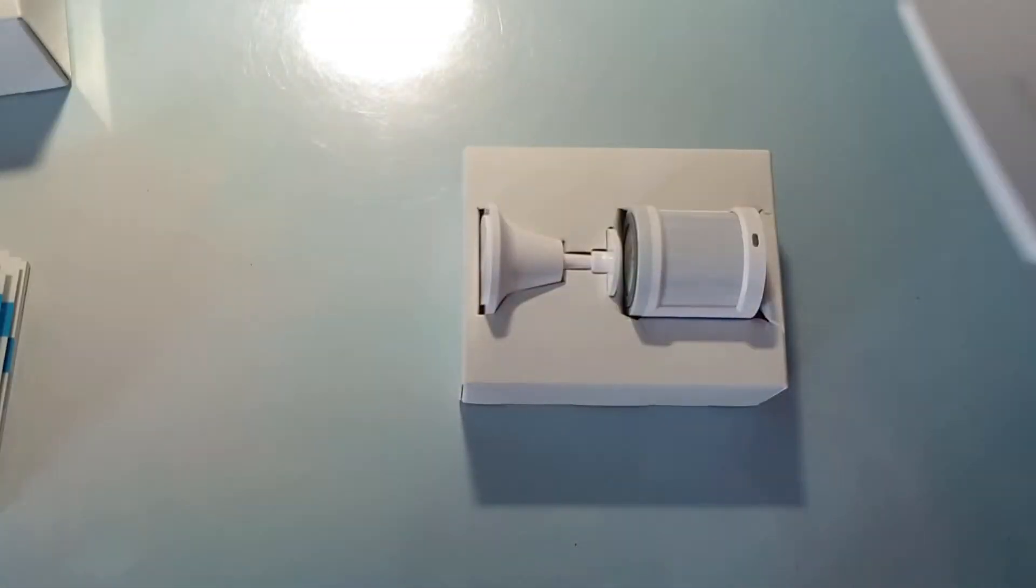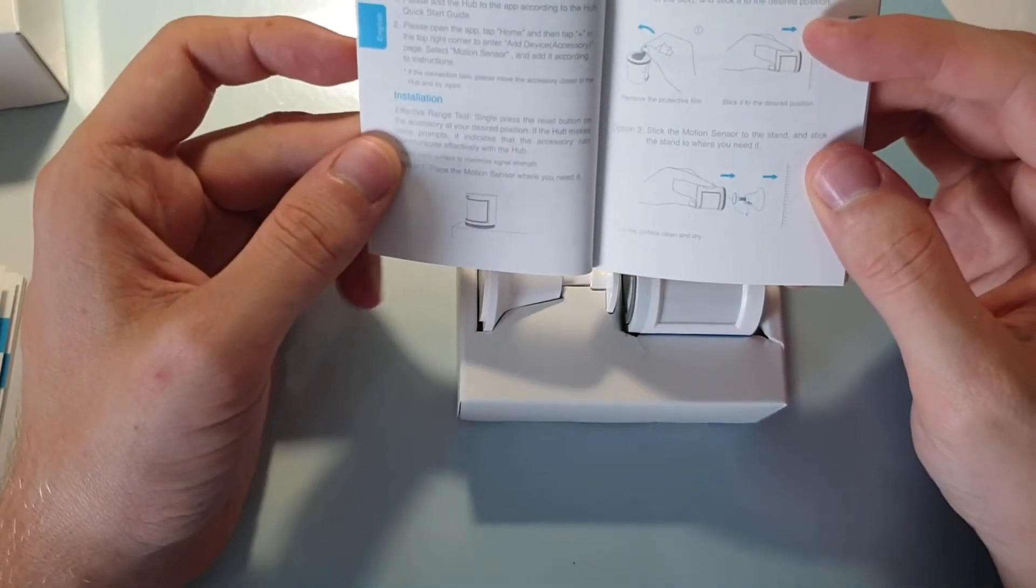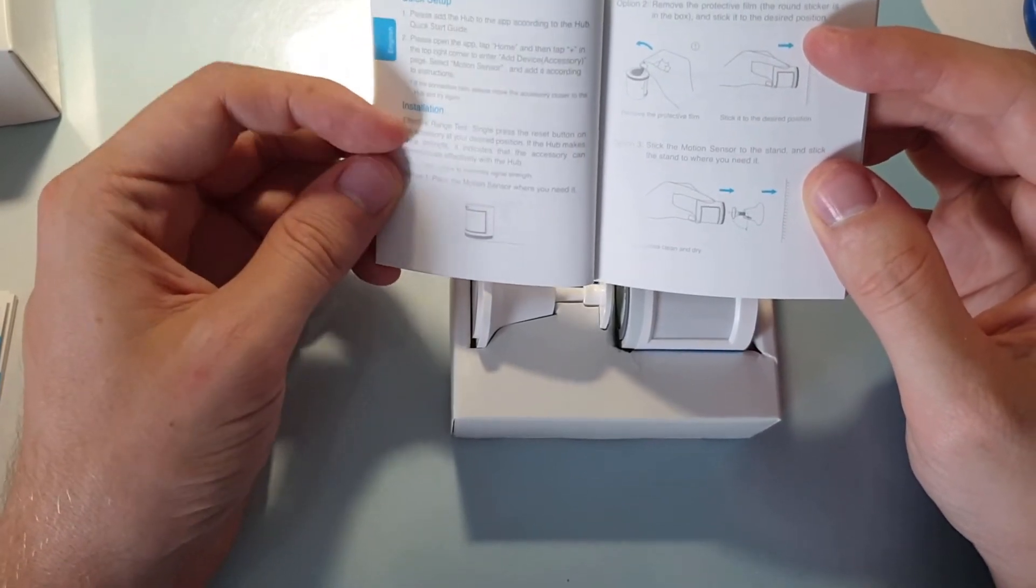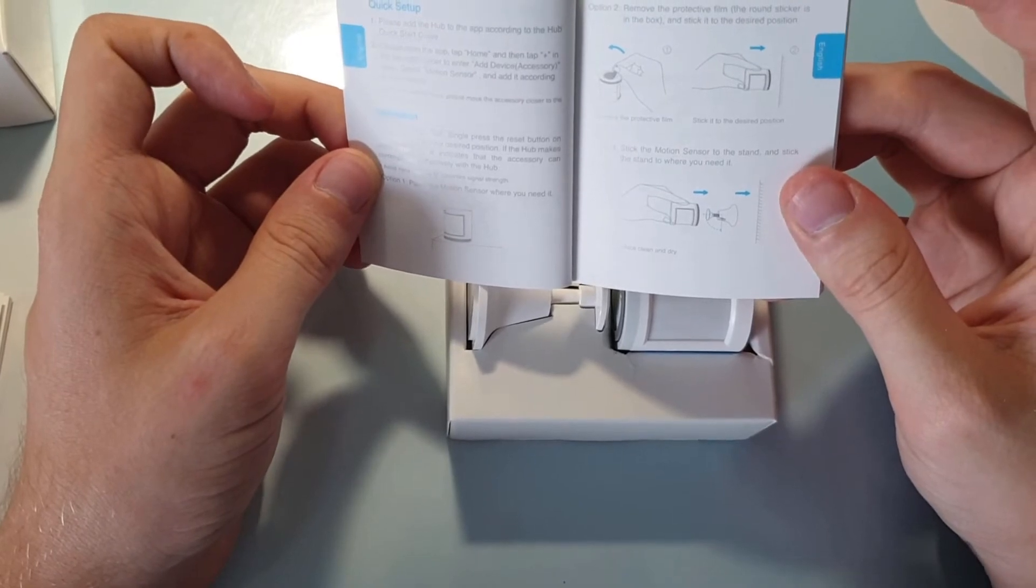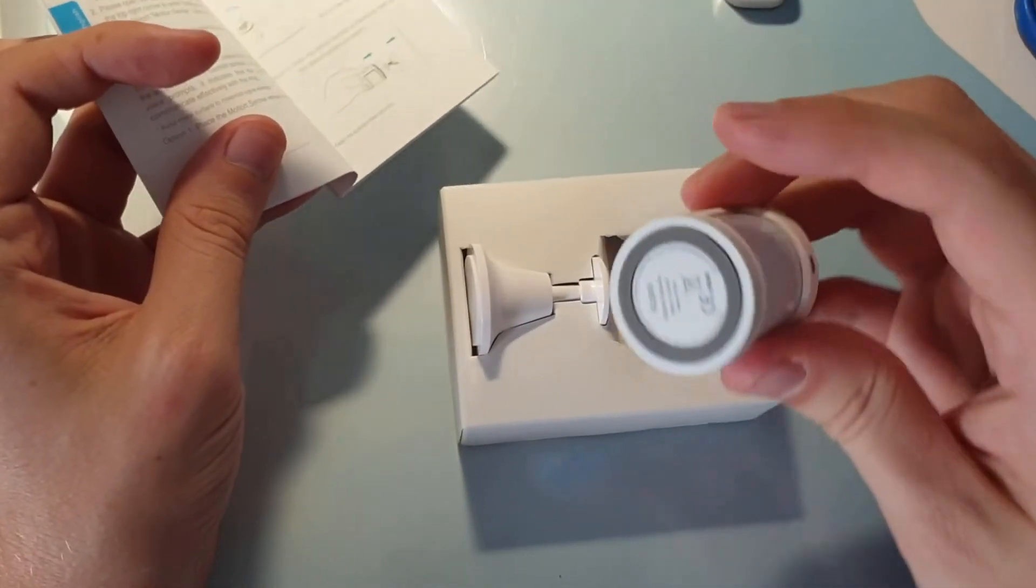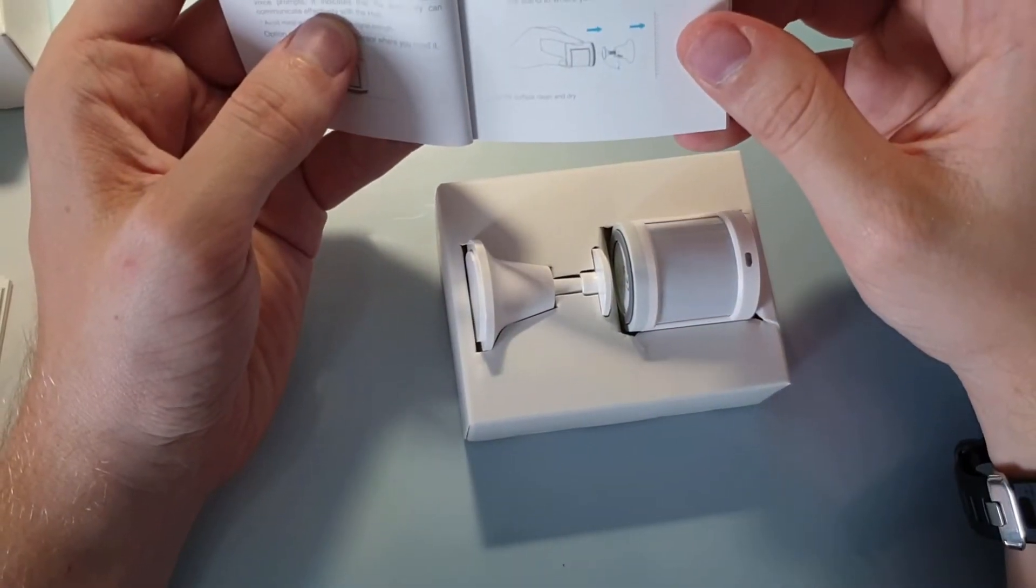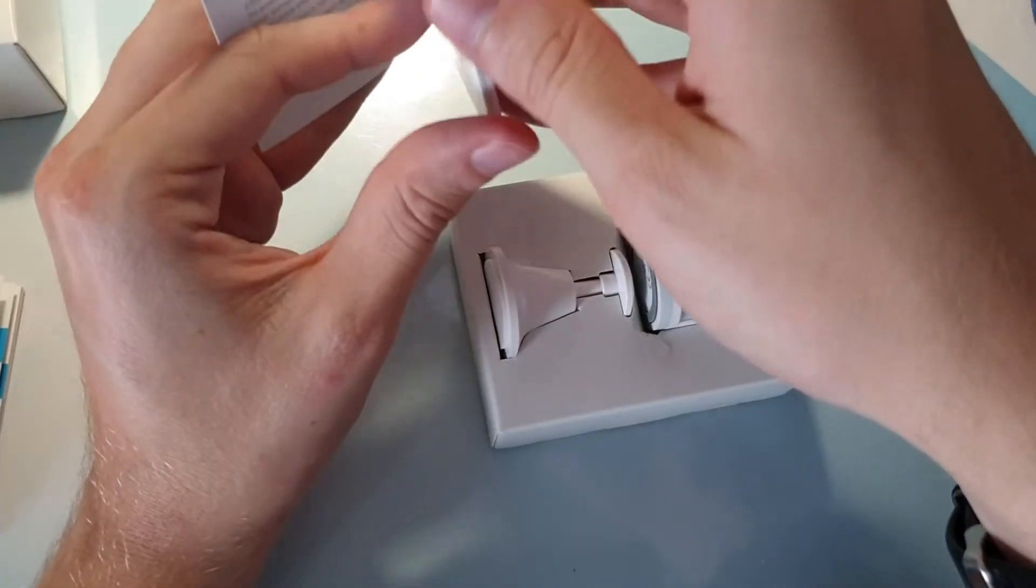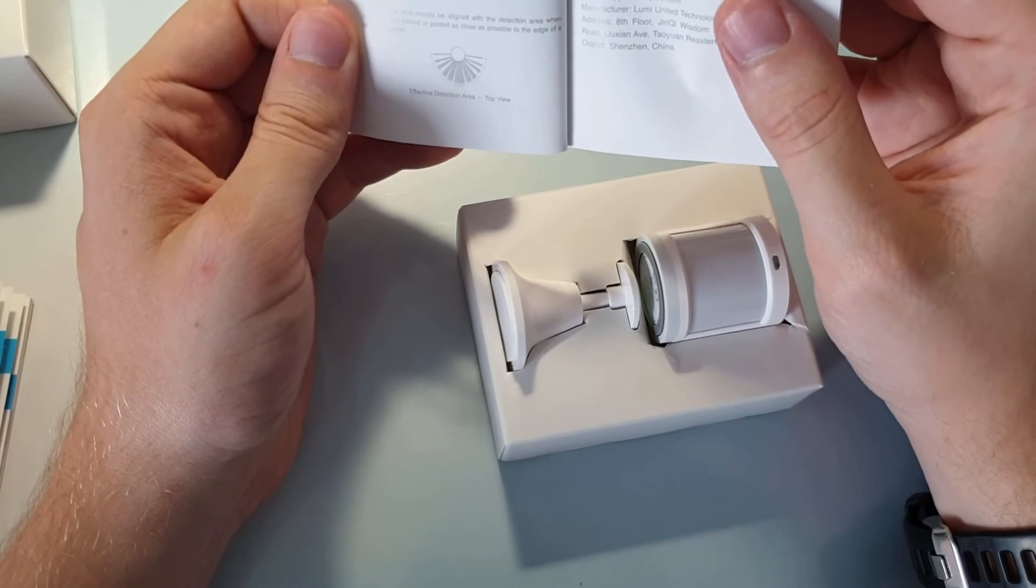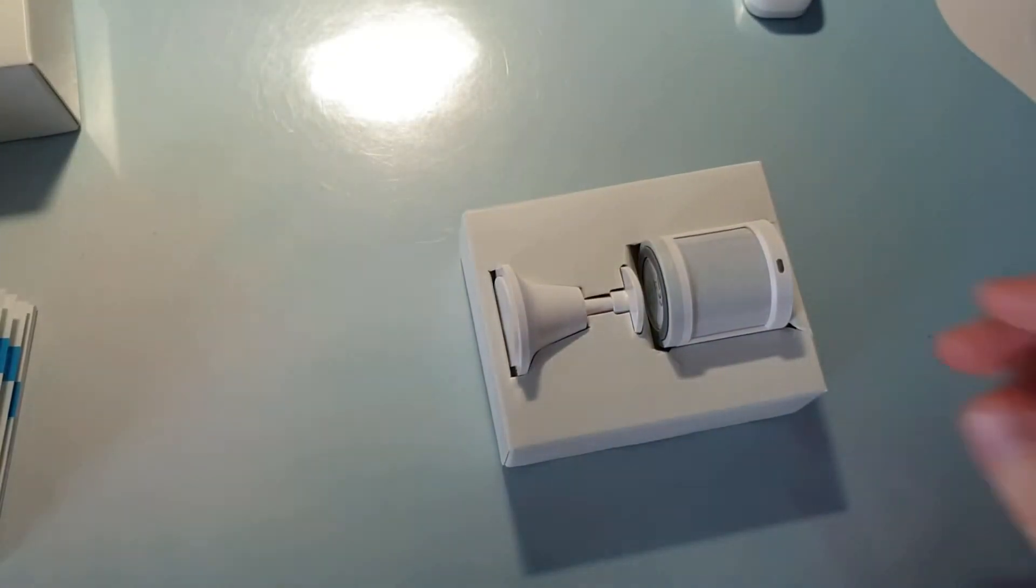There we go, we also have a little booklet. Let's see if there's anything useful in here. Remove protective film to stick it somewhere. Okay, there's apparently a sticky ring here, and you can also just stick it to the stand, which is probably what I'm going to do. Okay, fine, nothing special either.